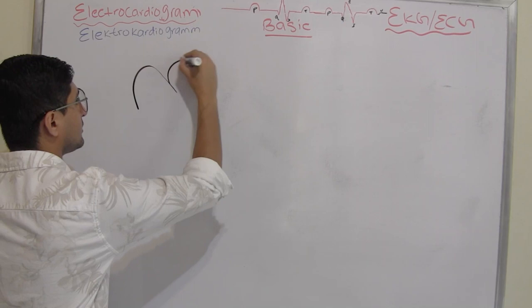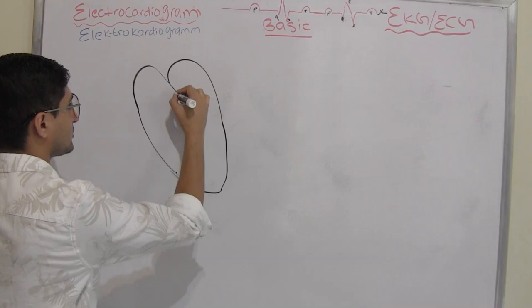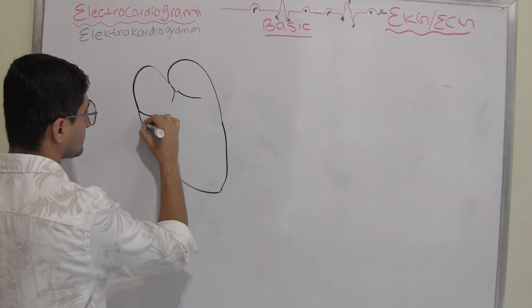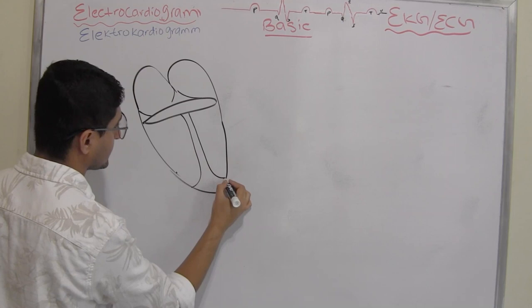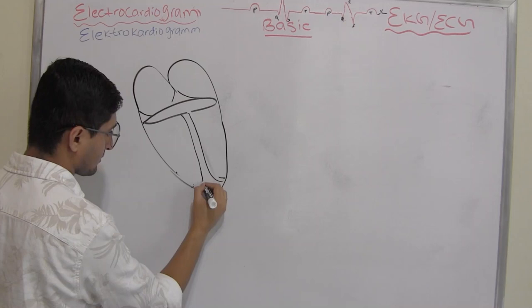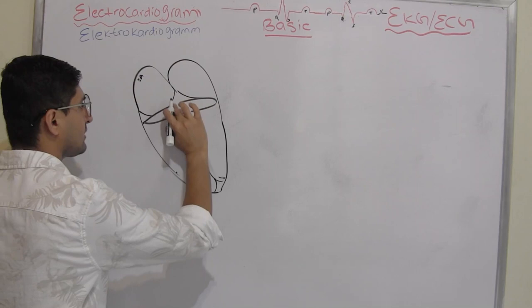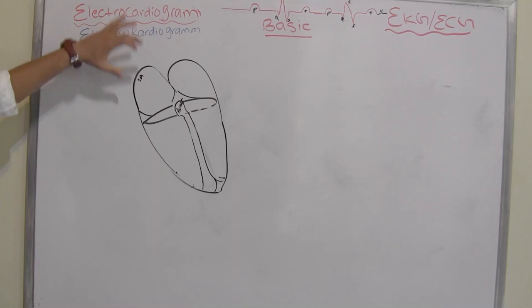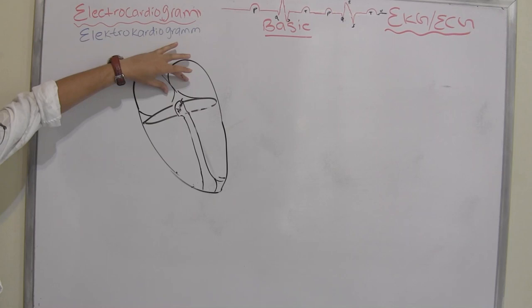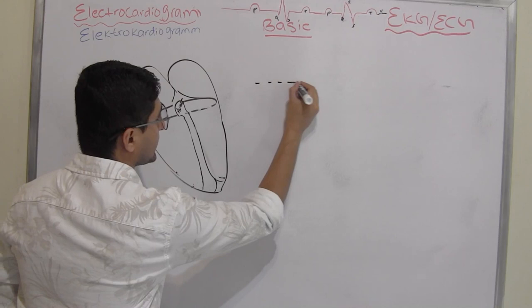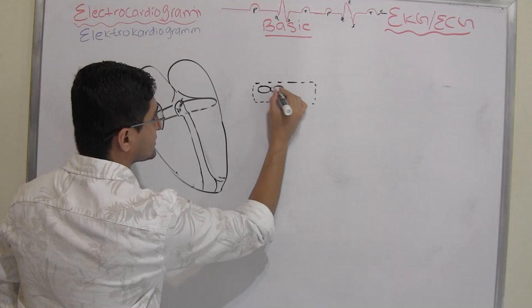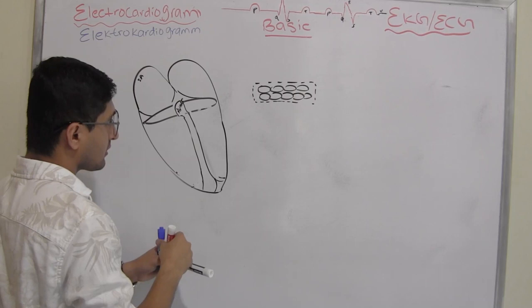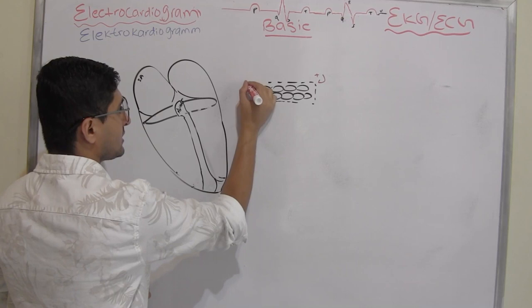Now, after atrial depolarization, all the impulses reaching the fibrous skeleton die out there — and you want that, because you don't want the ventricle contracting at the same time as the atria. The only way impulses can reach the ventricle is through the AV node, which is located at the triangle of Koch near the coronary sinus in the right atrium. Let's draw the AV nodal cells — they are very, very tiny and triangular in shape.